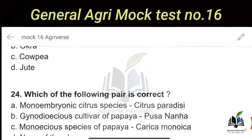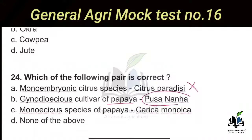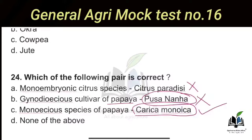The next question: Which of the following pairs is correct? Option A — monoembryonic citrus species: Citrus paradisi — is incorrect because monoembryonic citrus species is Citrus grandis (pumelo). Option B — gynodiocious cultivar of papaya: Pusa Nanha — is also incorrect. Option C — monoecious species of papaya: Carica papaya — is correct. So the correct pair is Option C.